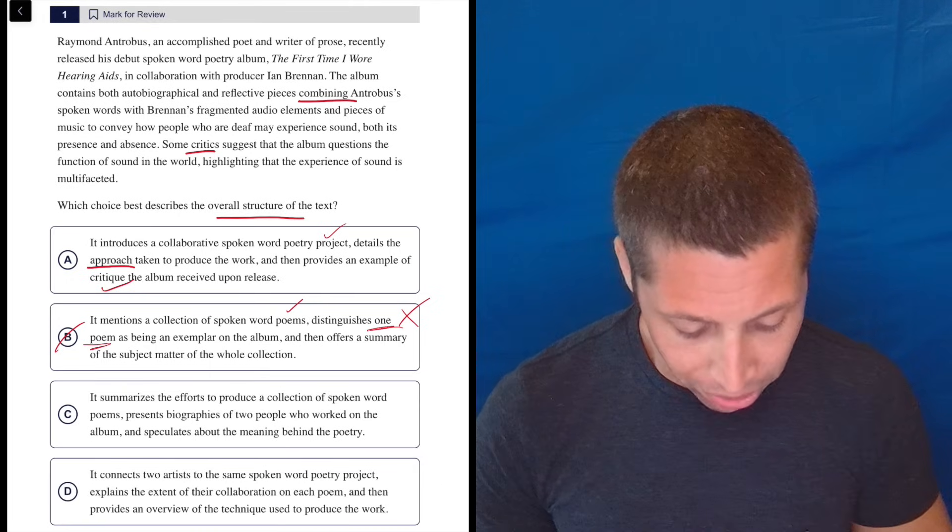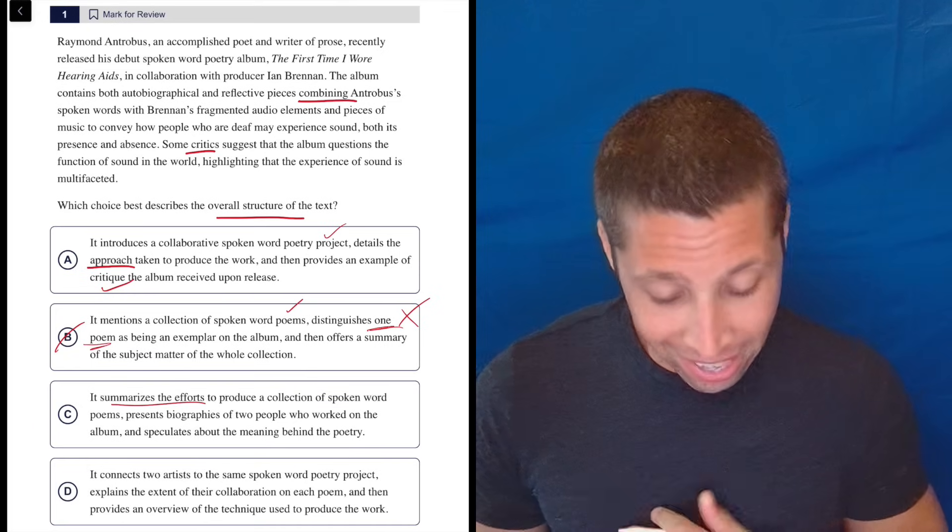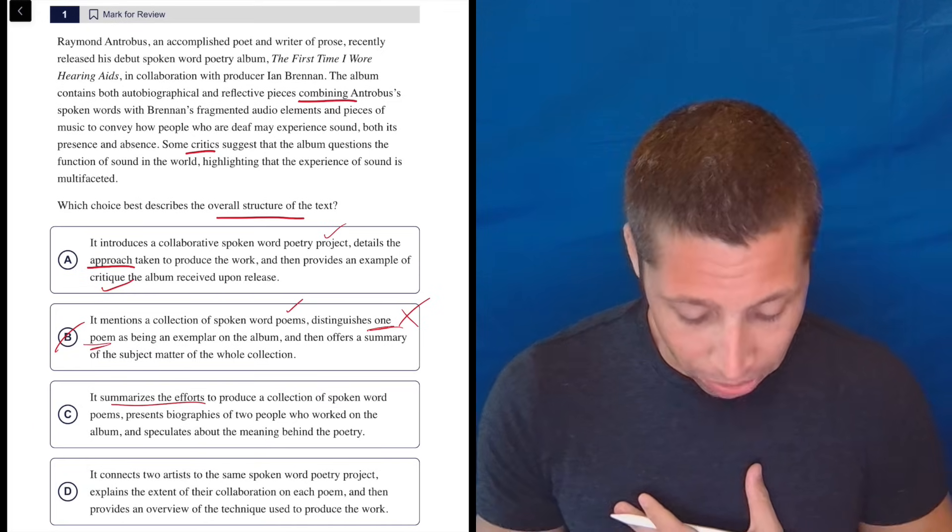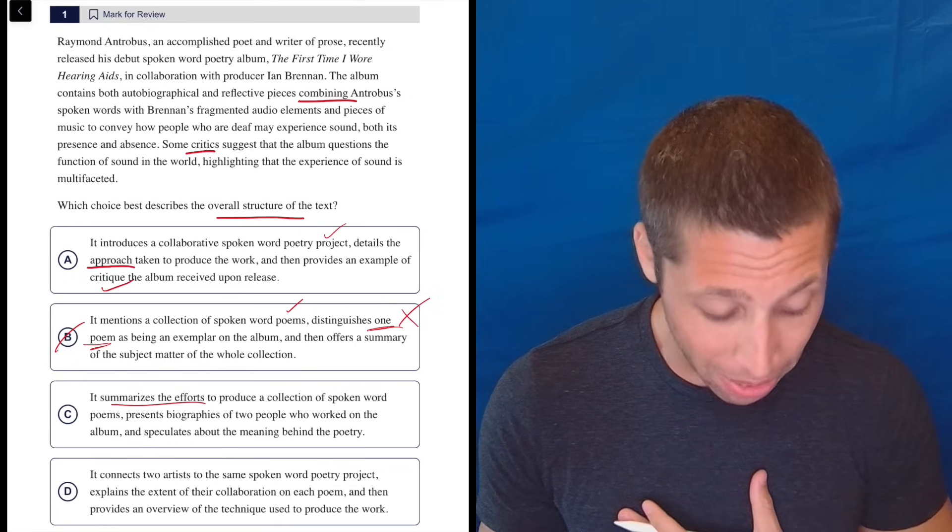But one of the reasons that I thought this might be a hard question is these answer choices are long, and they're long because each answer choice is kind of like three separate answer choices combined. So once I hit one that's wrong, it doesn't matter what the others say. So let's kind of follow that advice and move on to C. It summarizes the efforts to produce a collection of spoken word poems. Does it though? Does it summarize the efforts? Not in that first sentence. Maybe in the second one? I don't know.